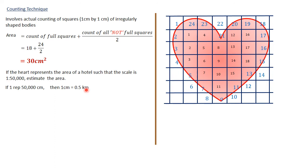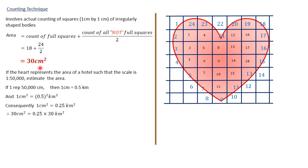Therefore, one centimeter squared is 0.5 squared, which means one centimeter square equals 0.25 of a kilometer square. Every full square represents 0.25 square kilometers. Therefore, the 30 centimeters squared we got earlier is 30 times 0.25, which means the hotel sits in an area of 7.5 square kilometers.